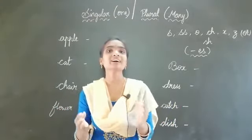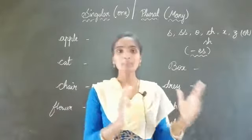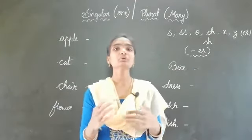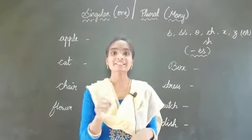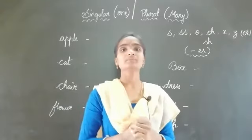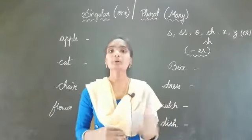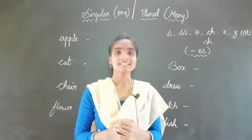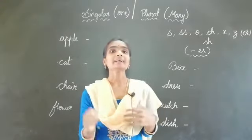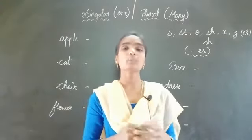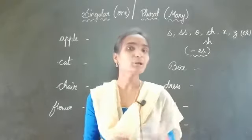We are going to make the single object into plural objects. We usually add S to the single object to make it as a plural form. Did you understand children? We add S to the single object to make it as a plural form.